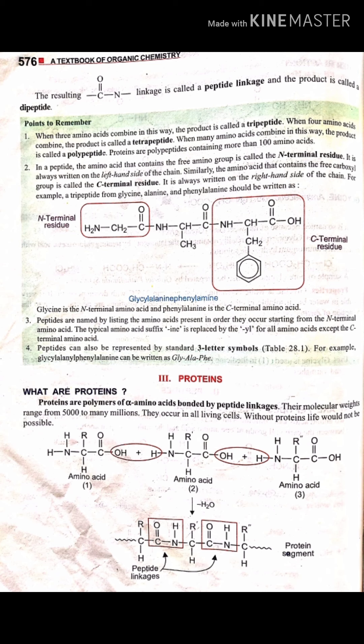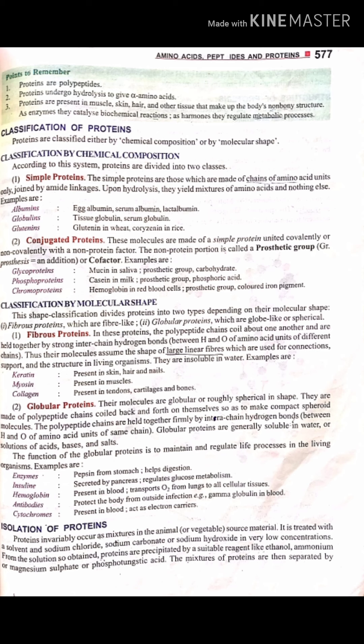Now we have a protein. A protein is a polymer made up of amino acids joined by peptide linkages. This type of bond is also called an amide linkage.